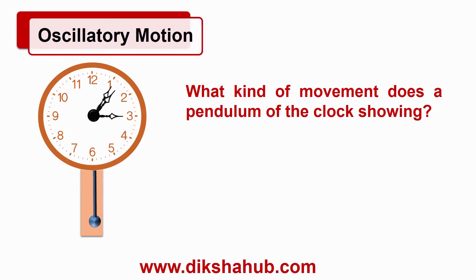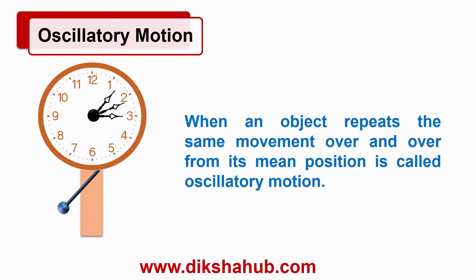Did you know what kind of movement does the pendulum of the clock show in the picture? Here, we can see the pendulum always coming back and forth, and it is taking about the same time for each oscillation. This movement is called oscillations of a pendulum. When an object repeats the same movement over and over from its mean position is called oscillatory motion.